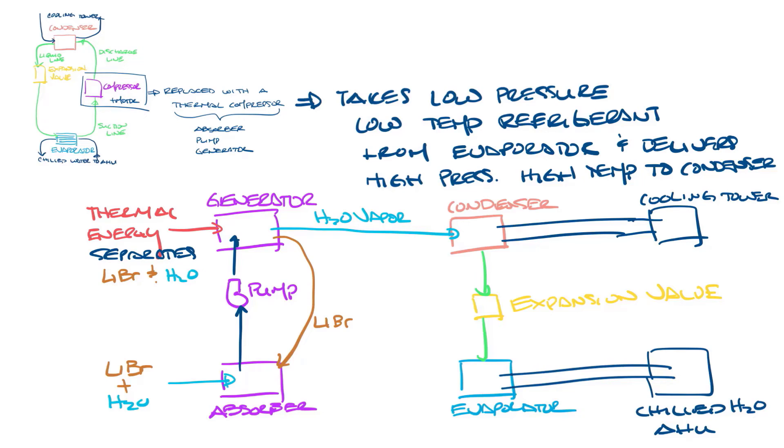The loop between the condenser, the expansion valve, and the evaporator are the same as before. But from the evaporator, the water is sprayed into the absorber to start the process again with the lithium bromide that's in the absorber.